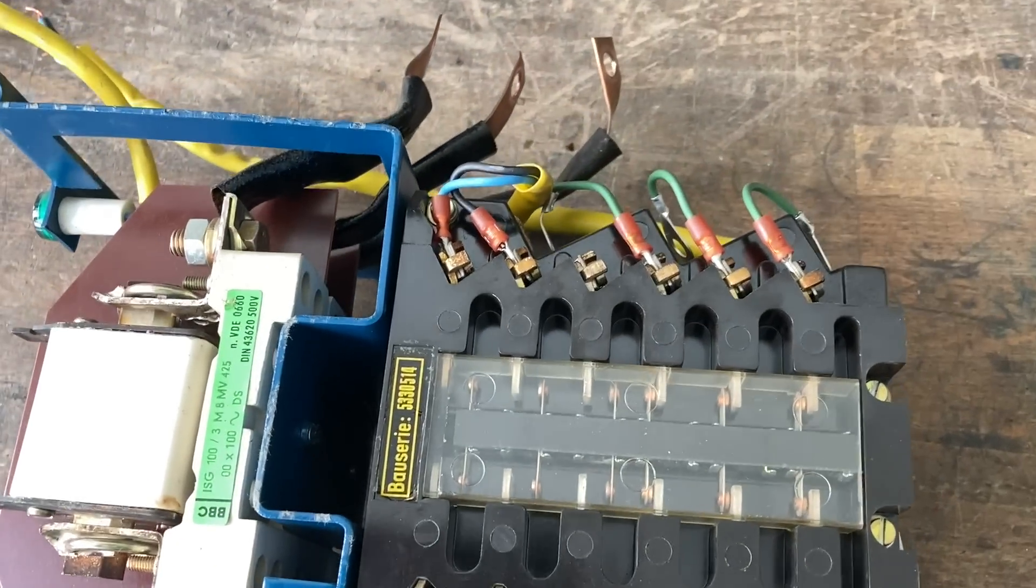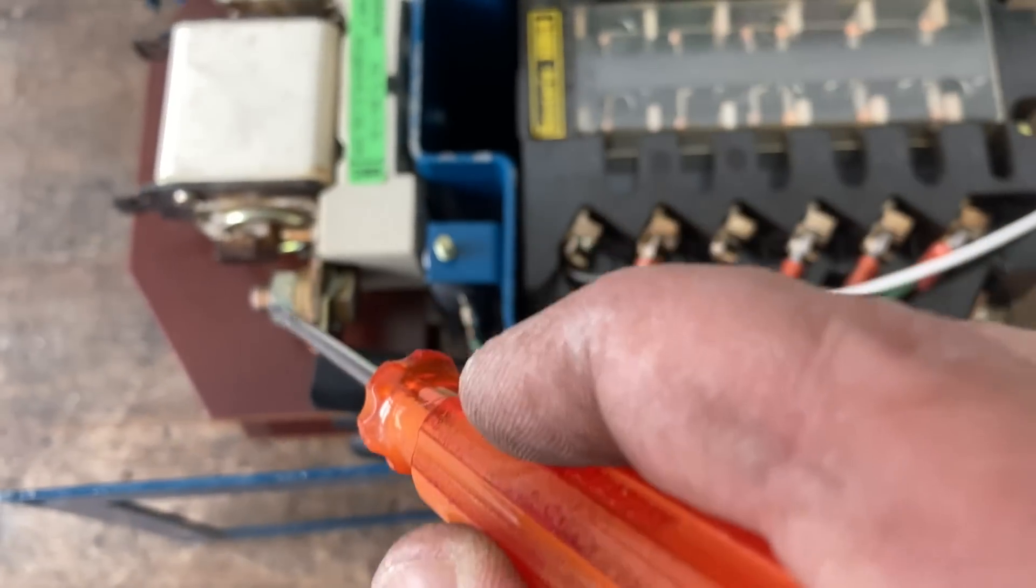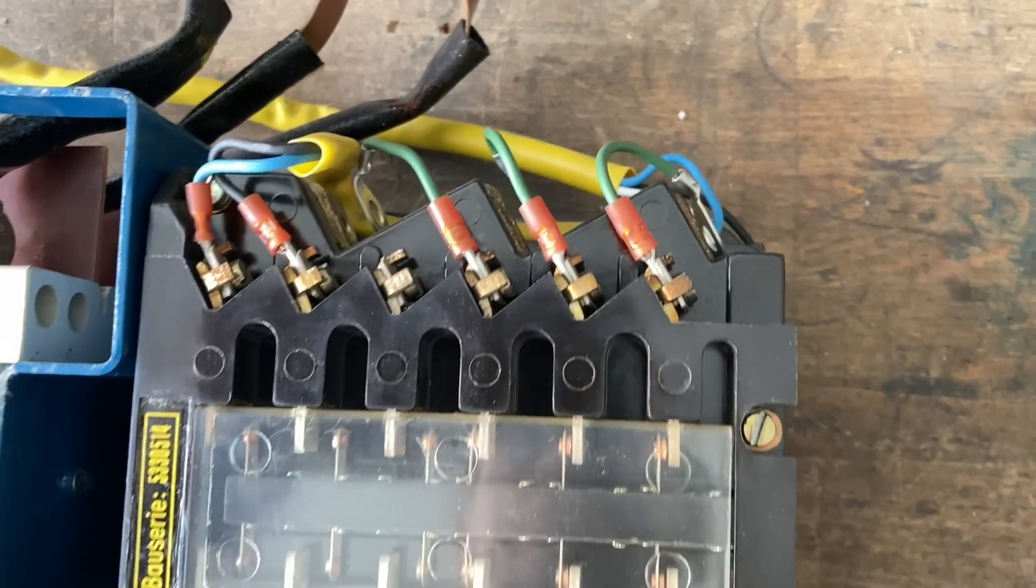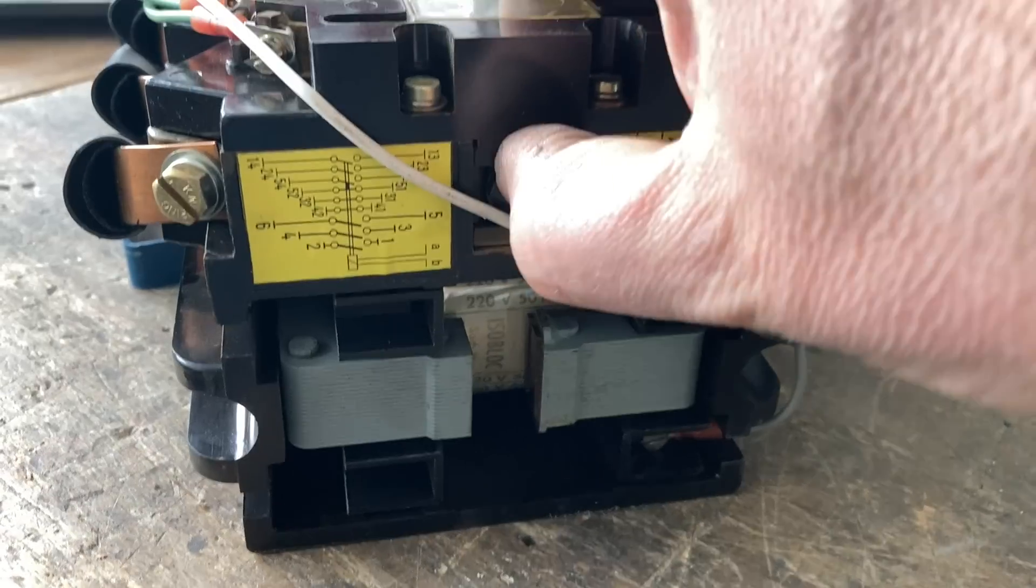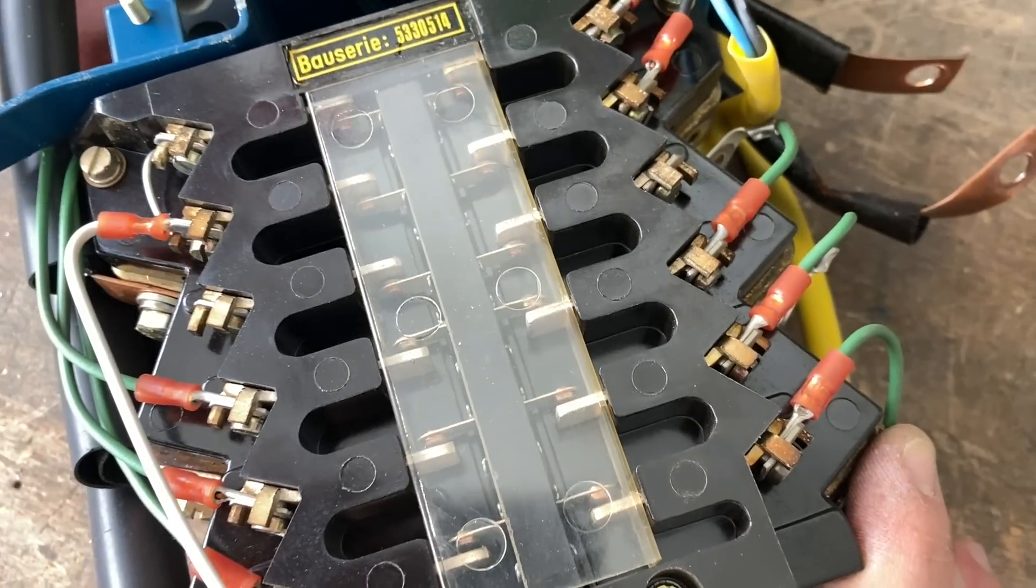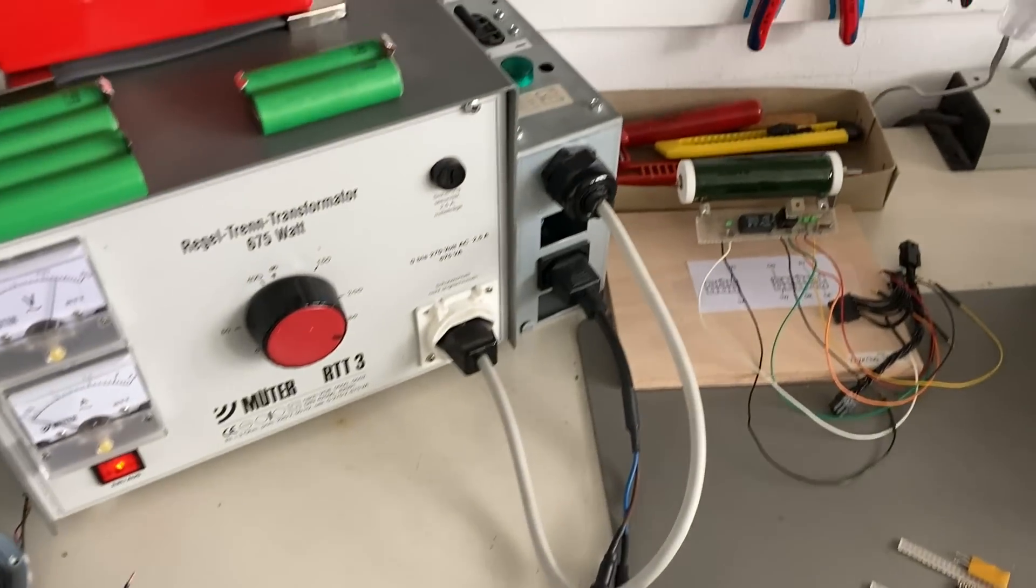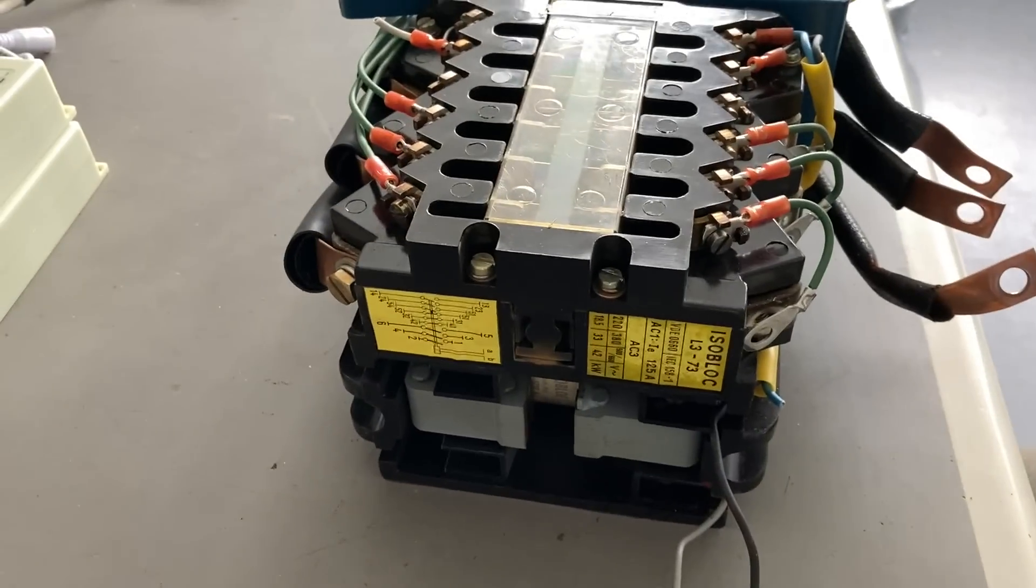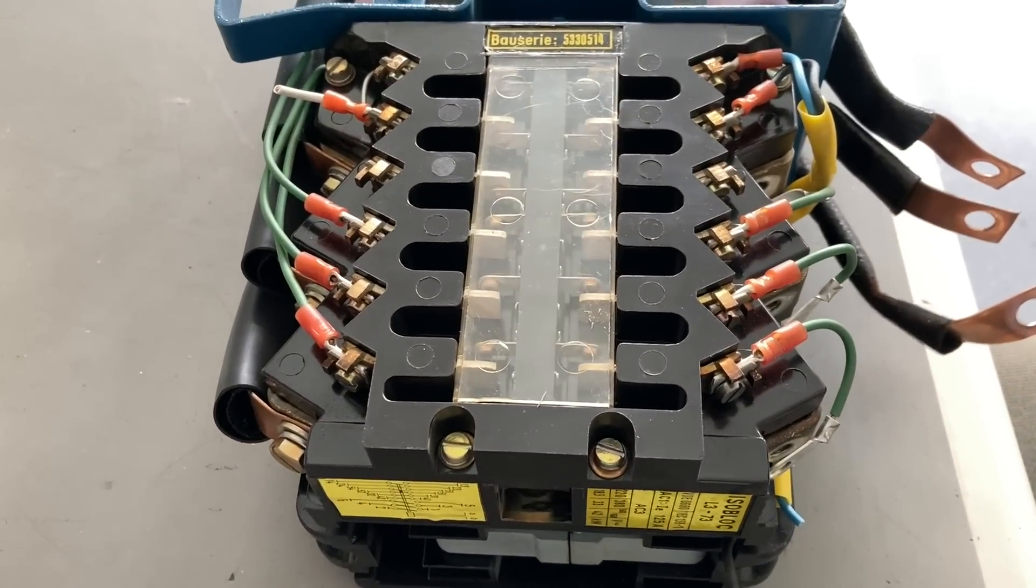That's how the relay looks when it is out of its case. We see there is the input, goes through the fuse, goes to the underside of the relay. Then on the top side, we have the three large wires that go to the capacitor. Each capacitor can be connected to the grid or not. I can tell you, this relay is really loud. I was just a little bit startled when I heard it the first time. I didn't expect it to make such a clunk.